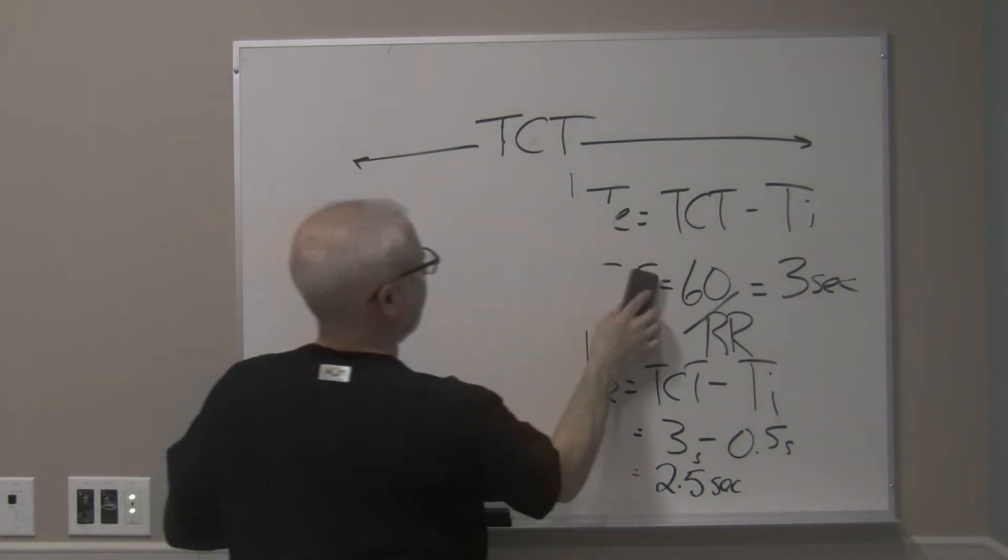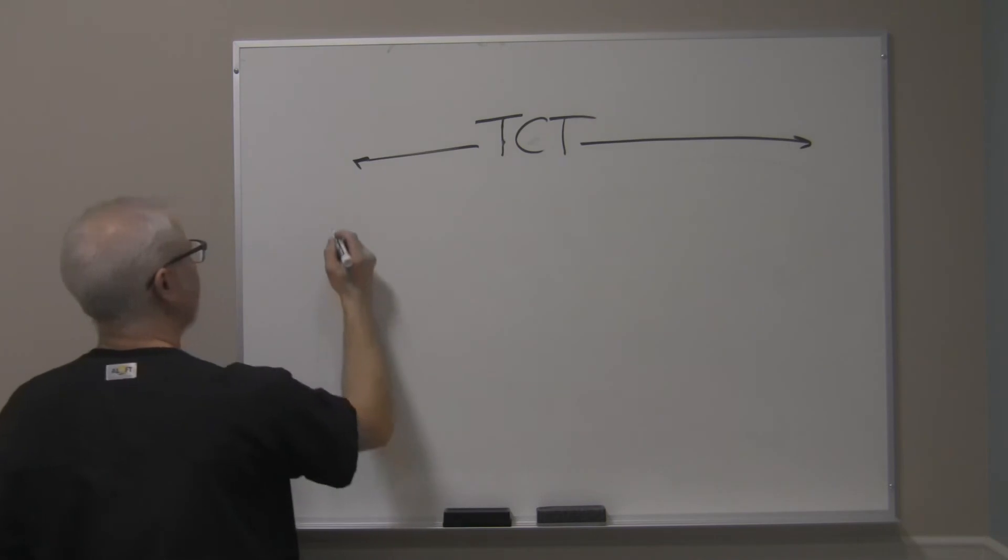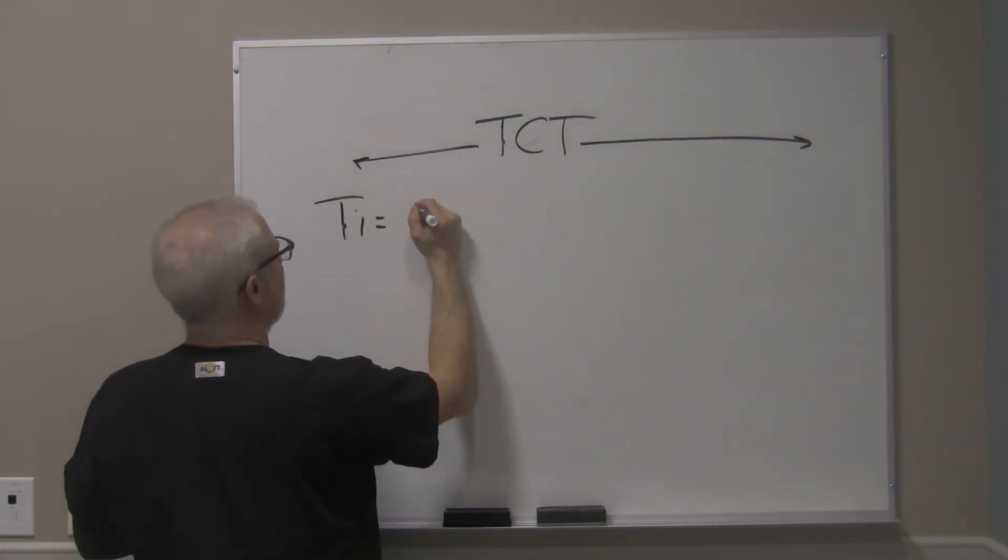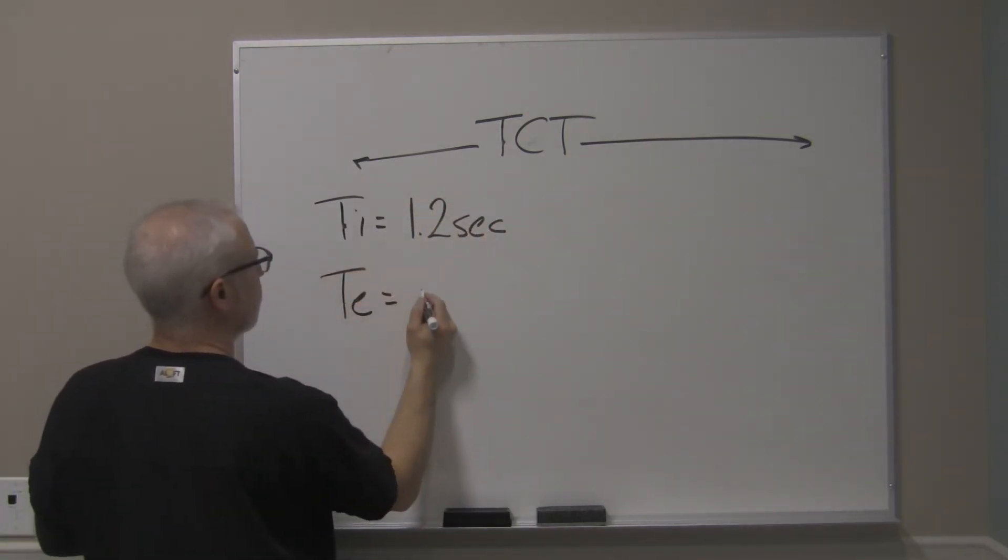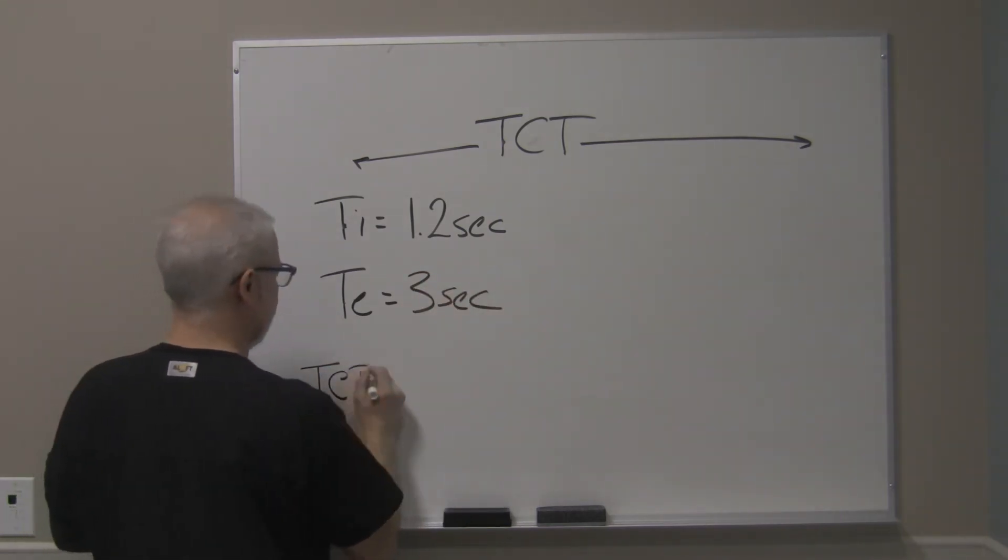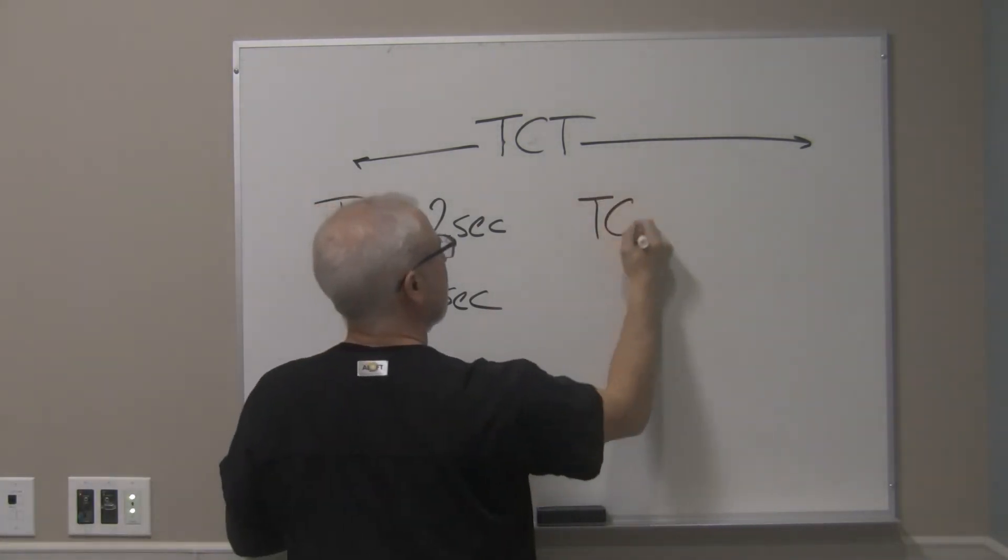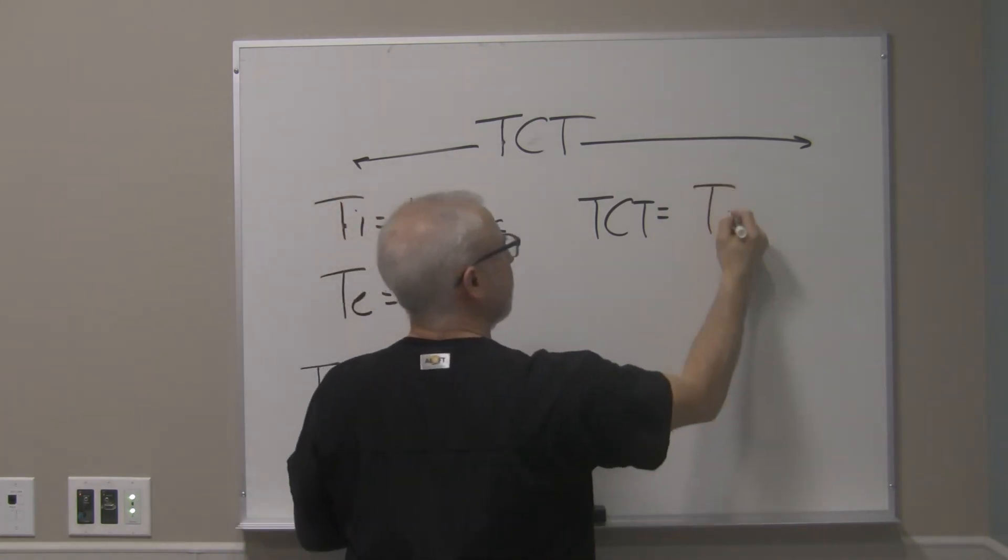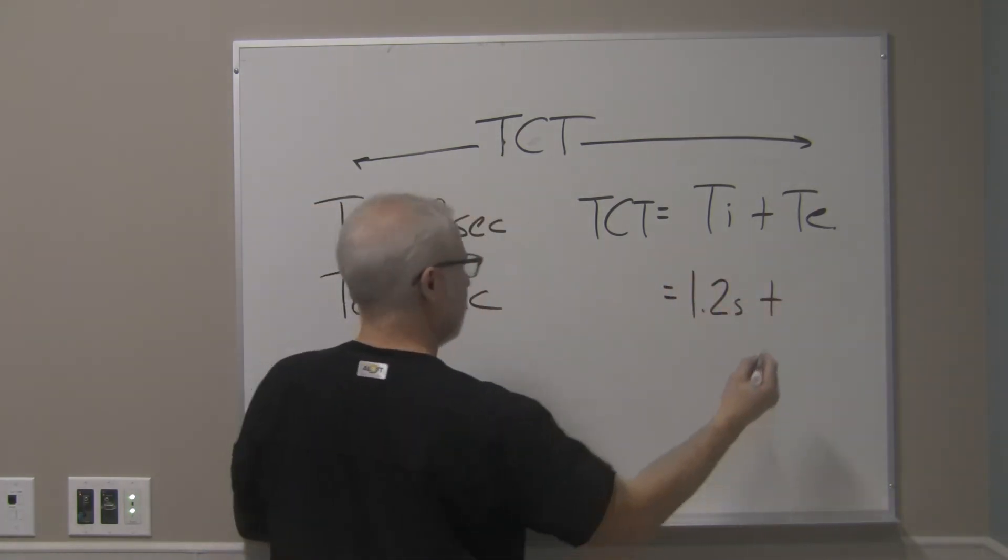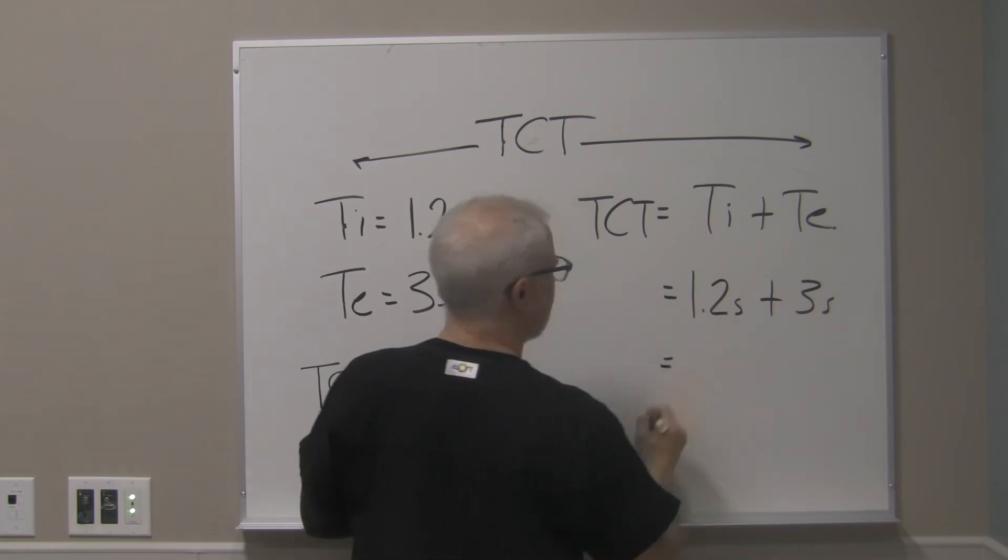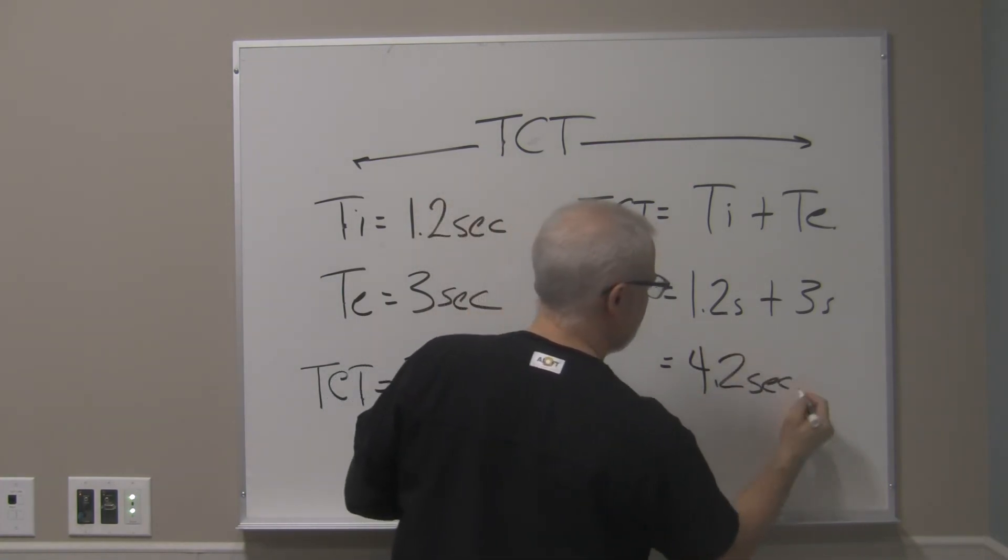And the last thing we're going to look at is calculating out total cycle time. So if you happen to have a TI equal to 1.2 seconds and a TE equal to 3 seconds, what's the total cycle time? So the total cycle time is equal to your TI plus your TE. So 1.2 seconds plus 3 seconds gives us the total cycle time of roughly 4.2 seconds.